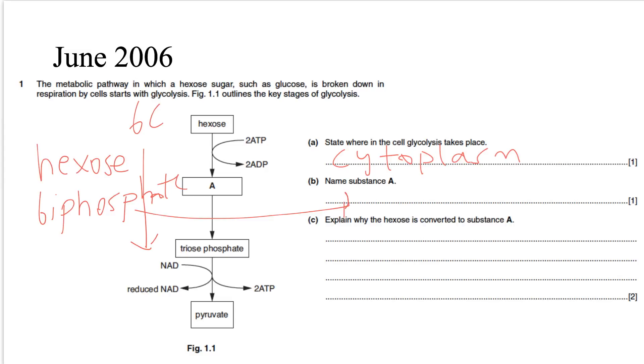Explain why the hexose is converted to substance A. So why hexose is converted into hexose bisphosphate? Why phosphorylation? Two reasons for phosphorylation. First of all, the glucose or the hexose sugar is energy rich, but not very reactive. So to activate, to activate the hexose sugar. And the second reason is to maintain the concentration gradient. Maintain concentration gradient.